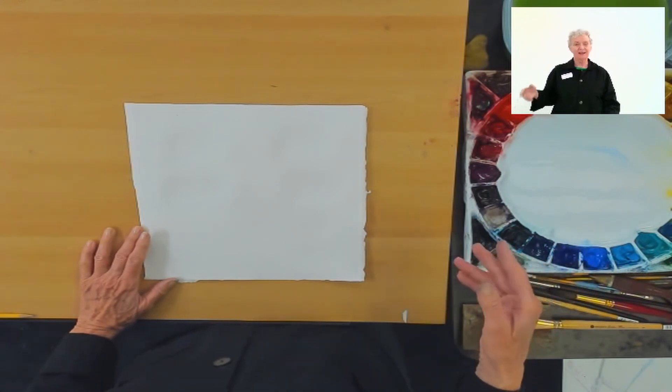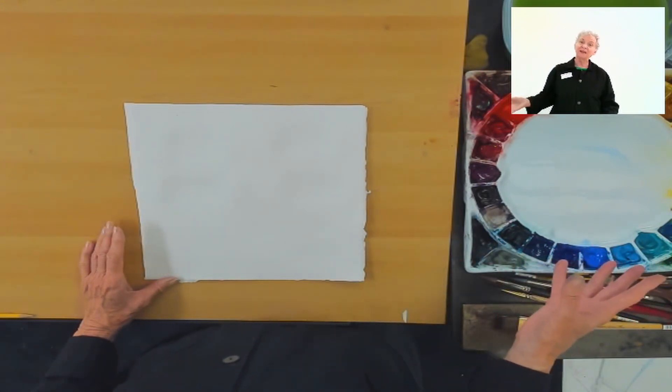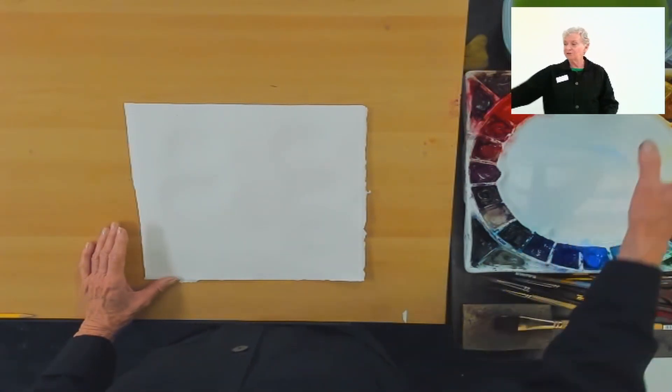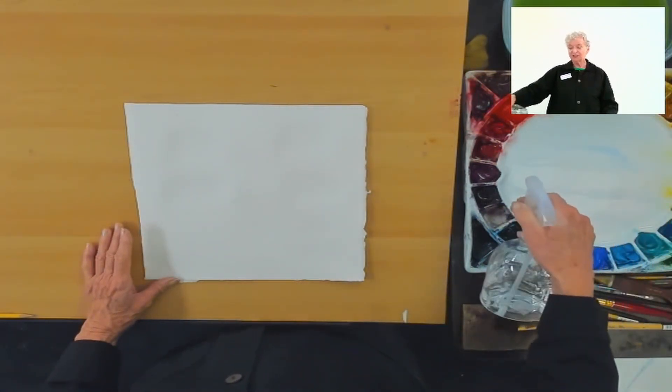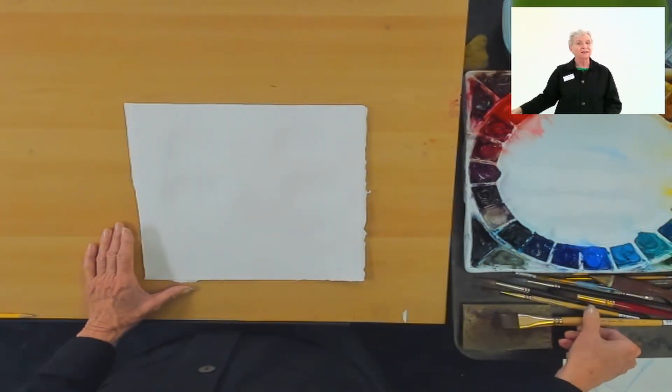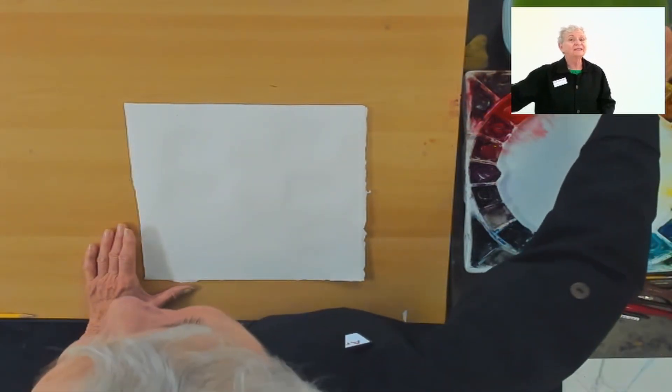Okay, so this is my palette and the paints that are in there have been in the wells for quite a long time. All I do when I get ready to paint is just spray them with the spray bottle so that they're a little bit moist when I go in to get the color. Let's see what happens.